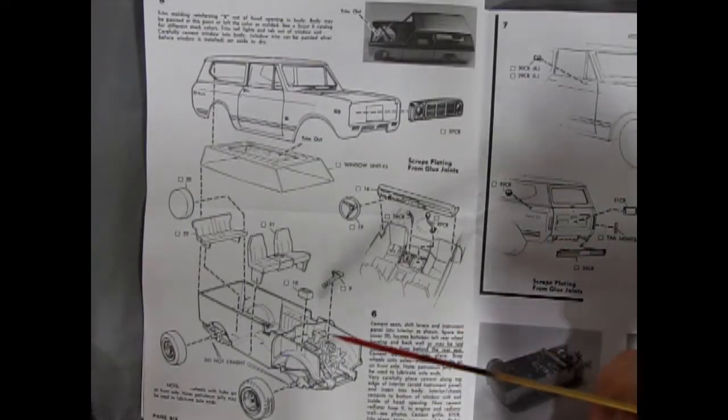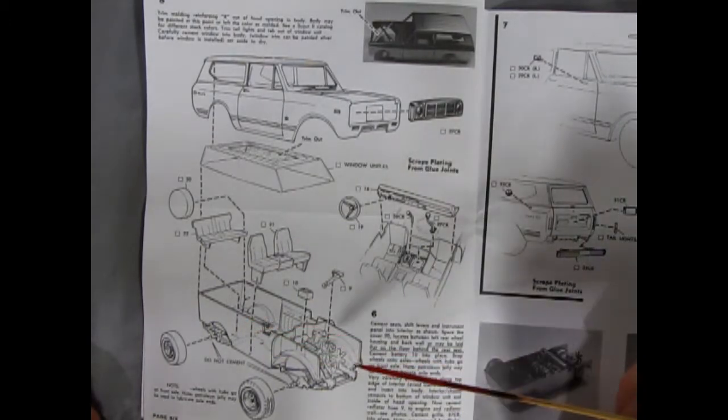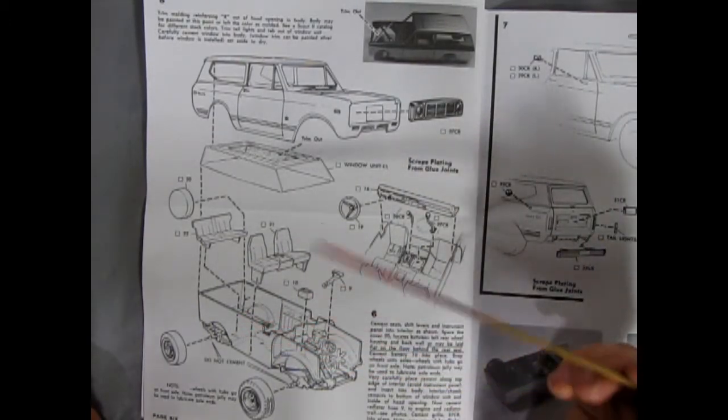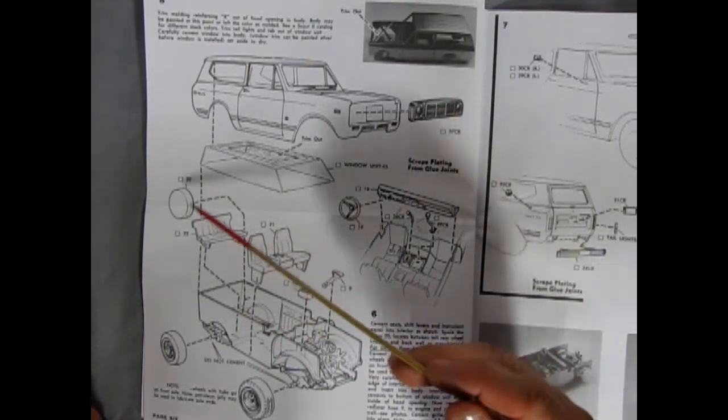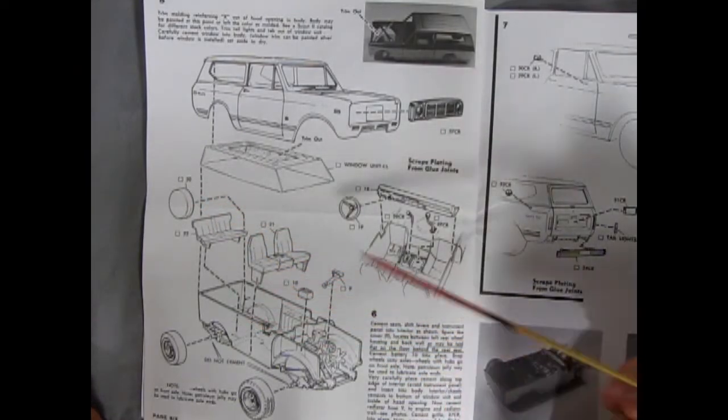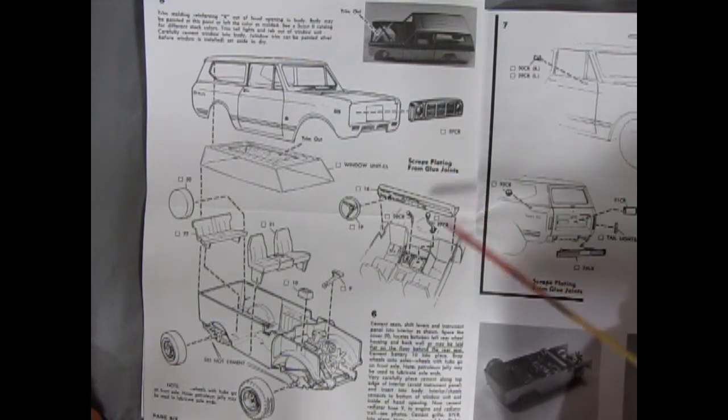Now this is rather unique because the chassis and the interior tub are all one complete unit. So then you can glue your seats in place as well as your spare tire and your battery and upper radiator hose. Then we've got the nice dashboard with steering wheel that pops into these grooves as well as our shift levers for the regular gear shift and to lock into four-wheel drive.